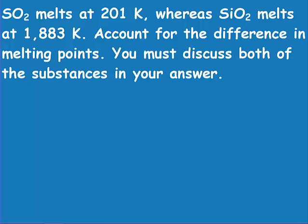Sulfur dioxide melts at 201 Kelvin, while silicon dioxide melts at 1,883 Kelvin. Account for the difference in melting point. Pause the video and restart when you have your answer.